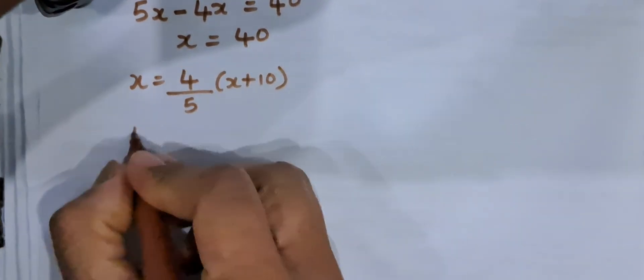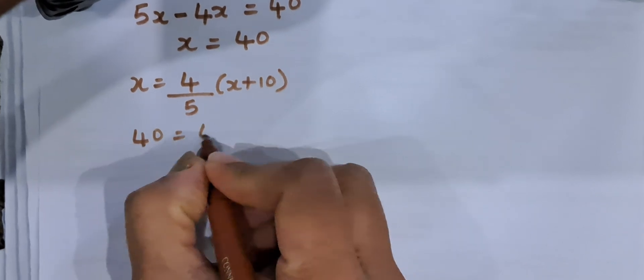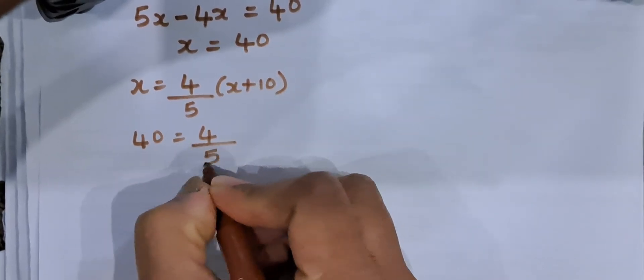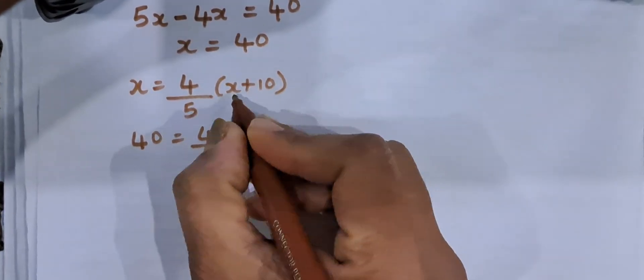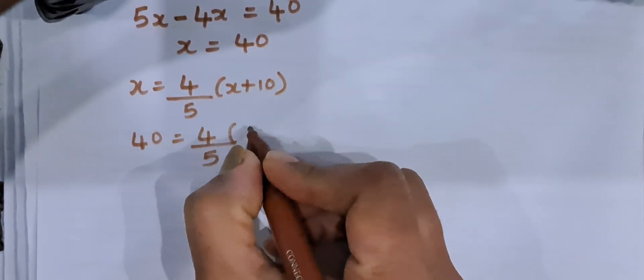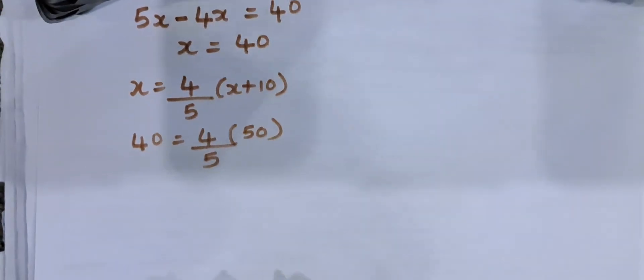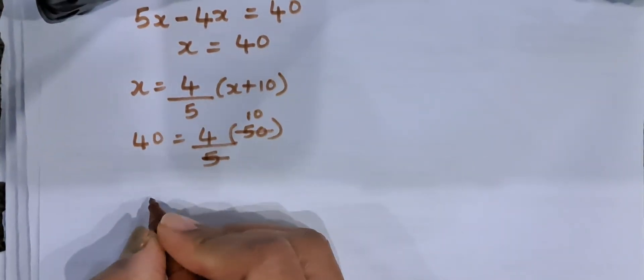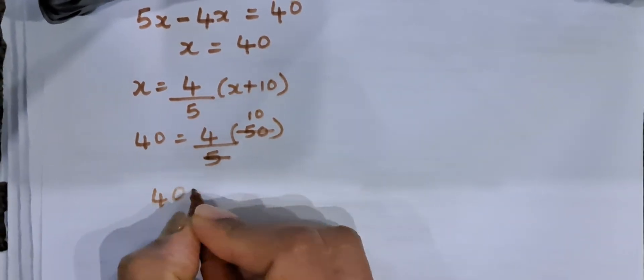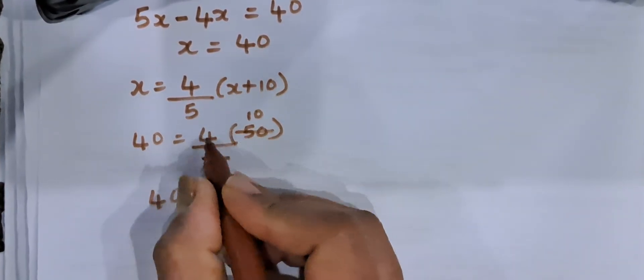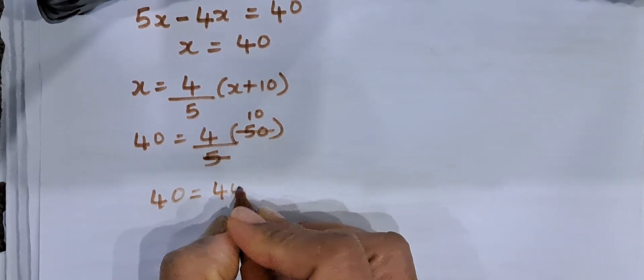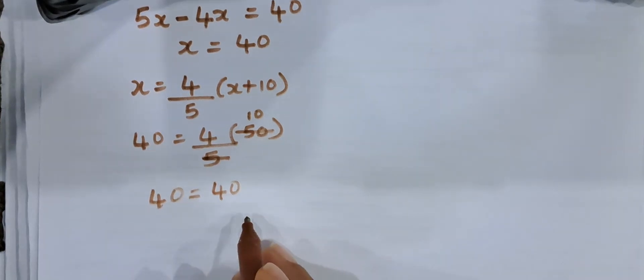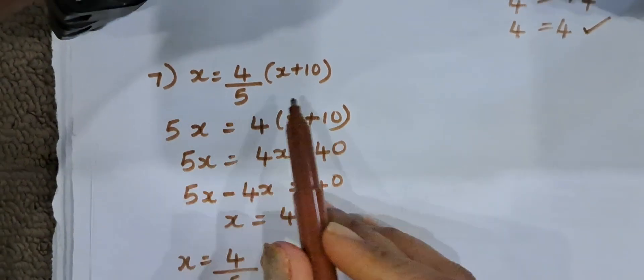The value of x is 40. So, 40 is equal to 4 by 5 into 40 plus 10, that is 50. 5 tens are 50. So, 40 is equal to 4 into 10 is 40. We got LHS is equal to RHS. We have verified the result.